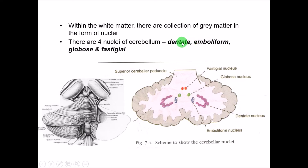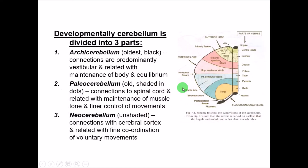There are four nuclei — collections of neuron cell bodies within the white matter. The largest is the dentate nucleus, then the emboliform, then the globose, and finally the fastigial nucleus. These are the four nuclei present in the cerebellum.